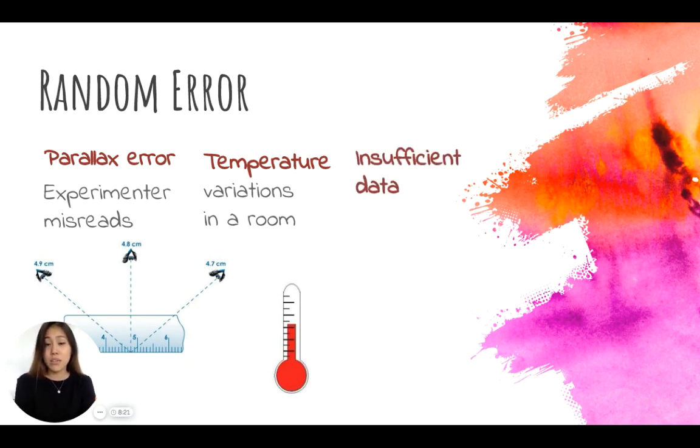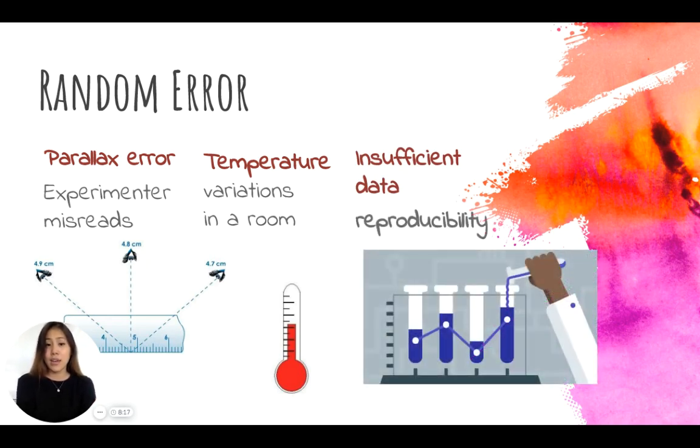It could also be insufficient data. So this means that you're not taking enough trials. Maybe for each experiment you're only running one trial, and if you're only running one trial, then that data might not be as reliable as you think. And so this is called reproducibility.